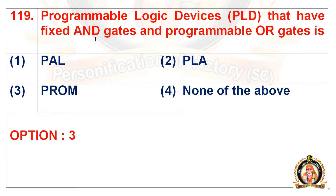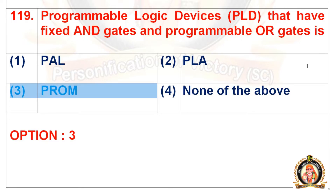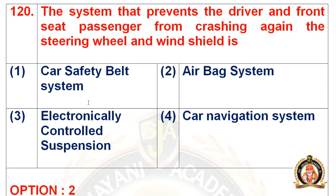Question 119: A programmable logic device (PLD) that has fixed AND gates and programmable OR gates. Options are PAL, PLA, PROM, and none of the above. The right option for question 119 is the third option, that is PROM. In PROM, it has fixed AND gates and programmable OR gates.